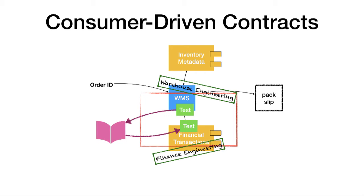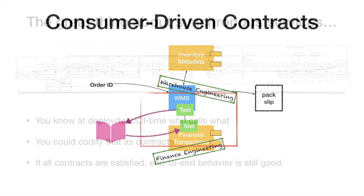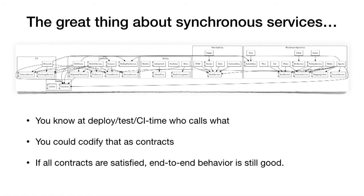The financial transaction service can have a test whose sole purpose is to grab this contract and execute it against itself. The contract is what the WMS is expecting to happen in production, and the financial transaction service can actually execute that contract and see if it does what the warehouse management system expects. If the financial transaction service makes a change, it can evaluate that change against this contract, and if it violates the contract, it knows the change will break the warehouse management system. We don't have to stand up every known service to run a test.